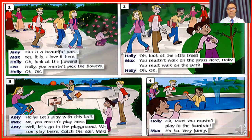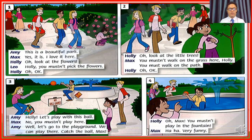Picture number two. Holly: Oh, look at the little trees. Max: You mustn't walk on the grass here, Holly. You must walk on the path. Holly: Oh, okay. Picture number three. Amy: Holly, let's play with this ball. Max: No, you mustn't play here. Amy: Well, let's go to the playground. We can play there. Catch the ball, Max.